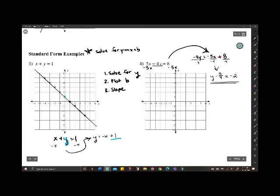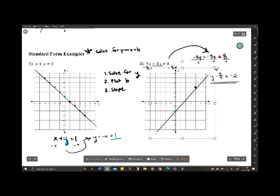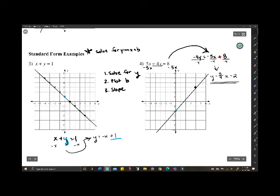Now, we have y is equal to 5 over 4x minus 2. We're going to start plotting at negative 2. We're going to go up 5: 1, 2, 3, 4, 5. And over 4: 1, 2, 3, 4. We can't quite make it that way at the other end. But, two points is all you need. So, you graph it. Solve for y, plot b, and then do the slope.